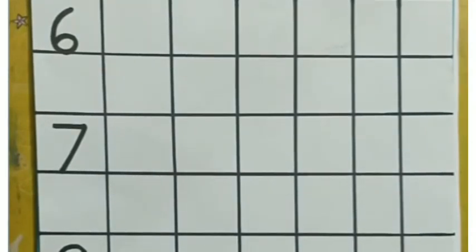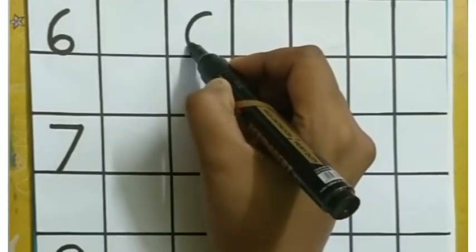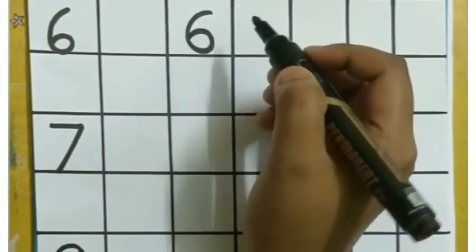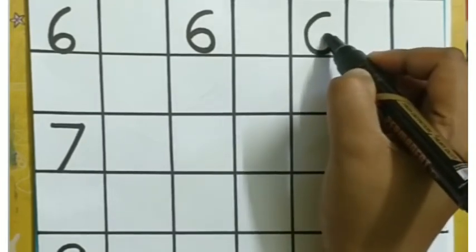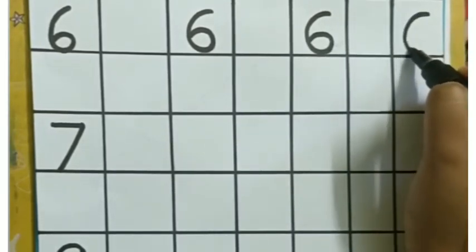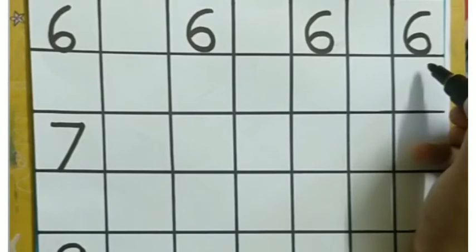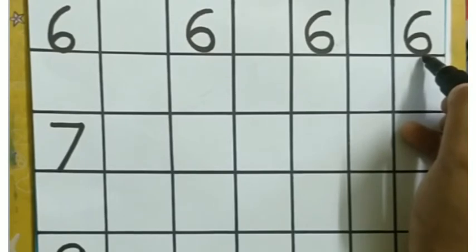Now we will learn how to write number 6 to number 9. So first we will start with number 6. How to write number 6? First we will make a right curve, which will join with a small left curve. Always you have to touch the below line. So like this we can make number 6.